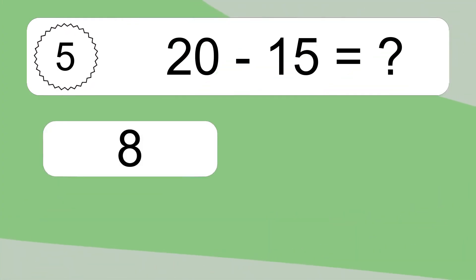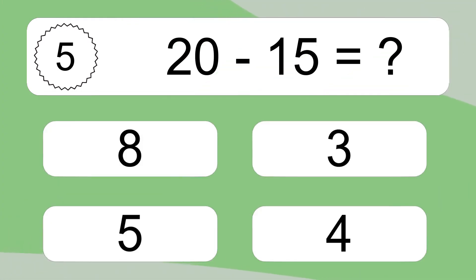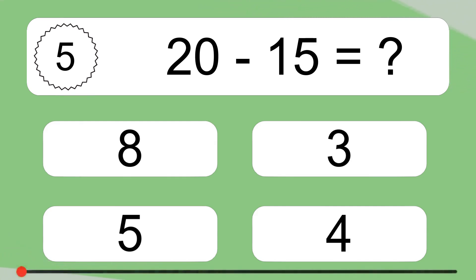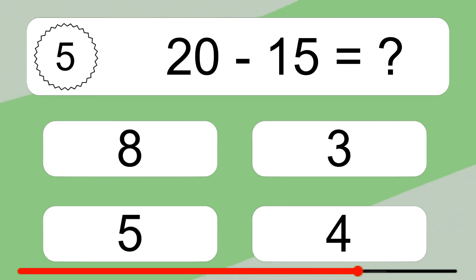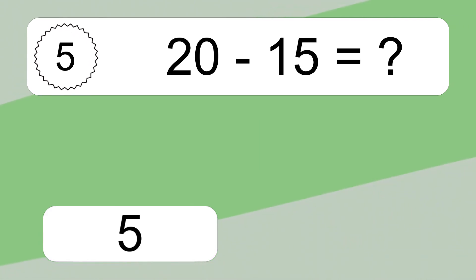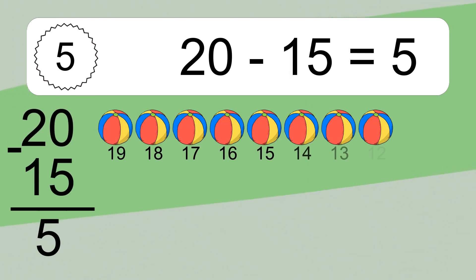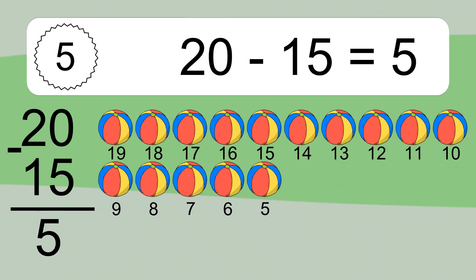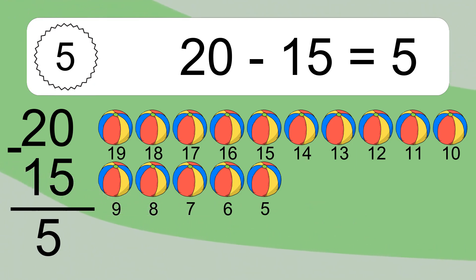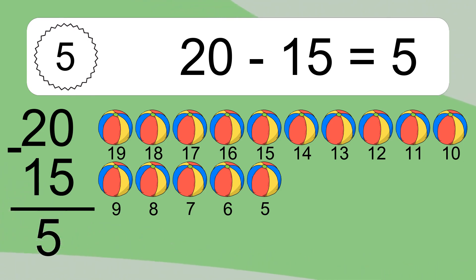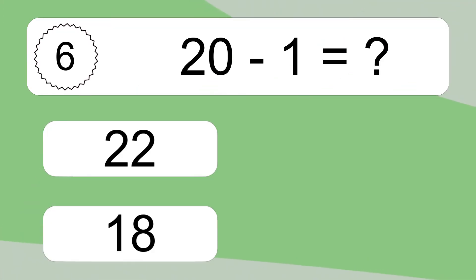20 minus 15 equals what? 20 minus 15 equals 5.